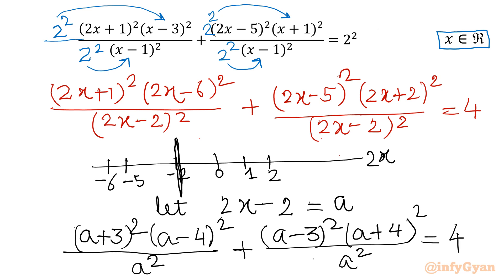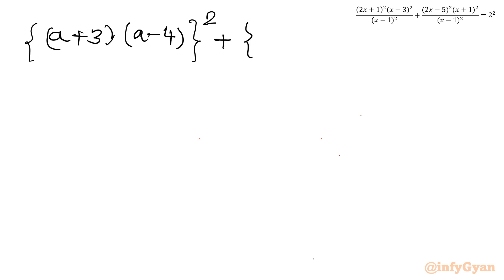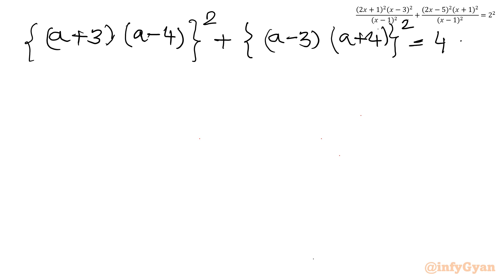Now I will take LCM — a² will go to the right hand side. One important point: the denominator has (x-1), so x cannot be equal to 1. Taking LCM, I write (a+3)(a+4) whole squared plus (a-3)(a+4) whole squared, and the right hand side becomes 4a².